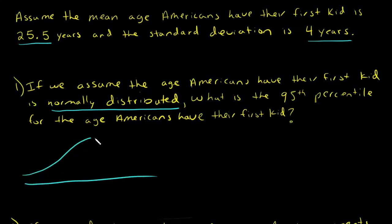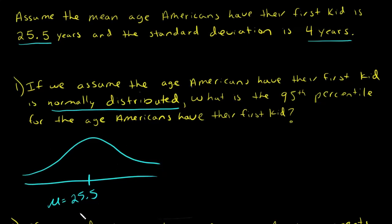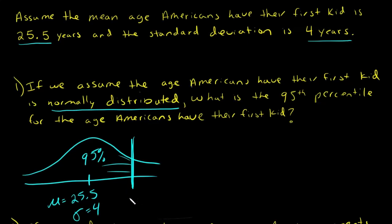We have a normal distribution and a normal distribution is centered on the mean, which is 25.5 — sometimes written as mu, the Greek letter mu for mean. Most Americans are having their first kid around 25.5 years old, some are having their kids earlier, and some are having their kids later. The spread of this distribution, or the standard deviation, is 4 years. What we want to do is find the cutoff for which 95% of Americans have had their first kid by whatever this age x is.